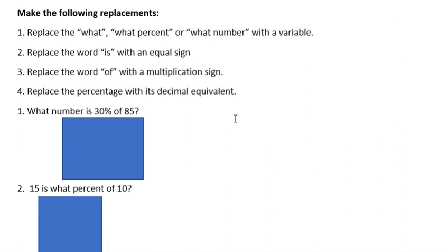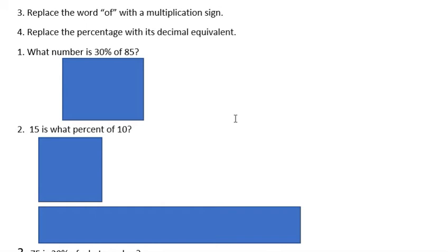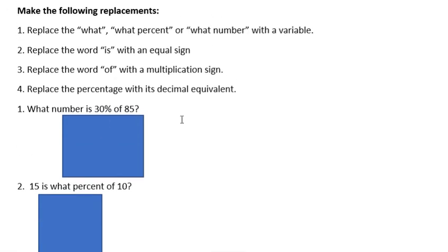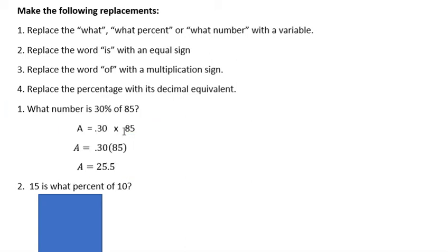The first example is what number is 30% of 85? So I'm going to make those four replacements. The what number is going to become the variable, and since we're missing the amount, it's going to be an A. The is is going to become the equal sign. 30% is going to become 0.30, or you could just write 0.3. Of is going to be multiply and then 85. So I'm going to remove the square that's covering that. And you can see that I have A equals 0.30 times 85.